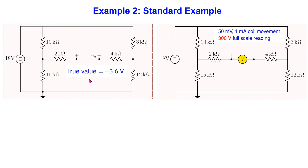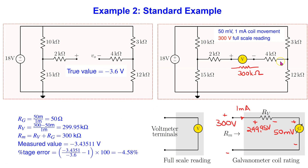Using circuit analysis the true value can be obtained as minus 3.6 volts. To measure this open circuit voltage we connect the voltmeter with the given specifications as shown. We can analyze the voltmeter as before to obtain the effective meter resistance, which comes out to 300 kilohms.